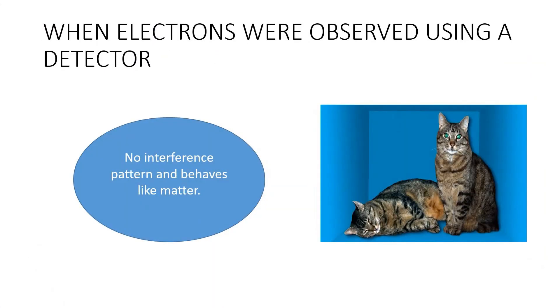But the most uncanny things happened when we used a detector to peep the electrons to see which slit actually the electrons go through. Then the interference patterns disappear and the electrons are behaving like matter simply by observing a particle's path. Even if that observation should not disturb the particle's motion, we change the outcome. It's very strange.